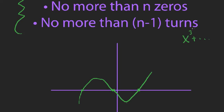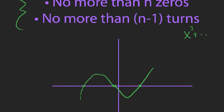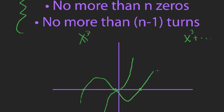However, another cubic polynomial might have only one zero and no turns because it's increasing the whole time. So you can't infer a whole lot from a graph alone. What you can infer is what a polynomial isn't — for example, a graph with three zeros cannot be degree 2, since a degree 2 polynomial can have at most two zeros.